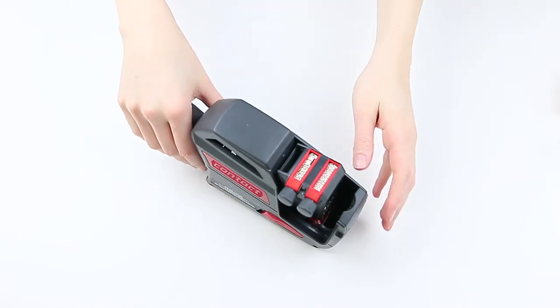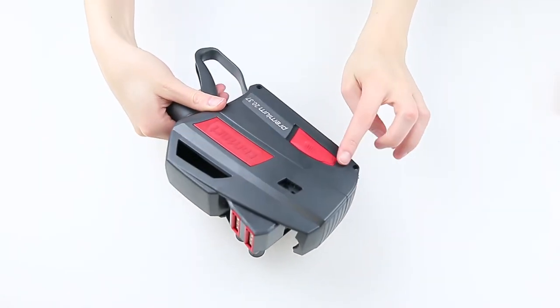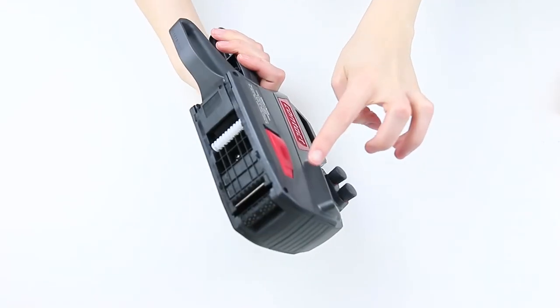To insert a new label roll, you need to open the bottom of the labeler. To do so, push the two red caps in the direction of the grip.